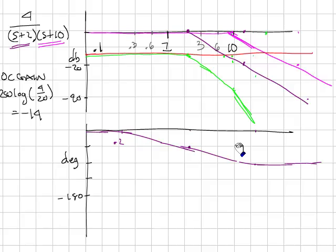And then for 10, total phase of 45 at the break point and go one decade on each side. The curve will do something like this. And then you add those together.